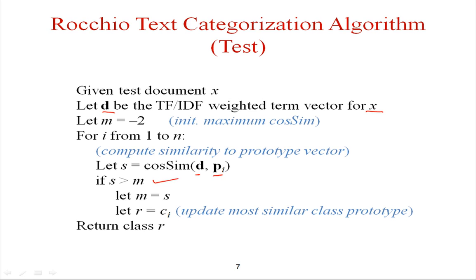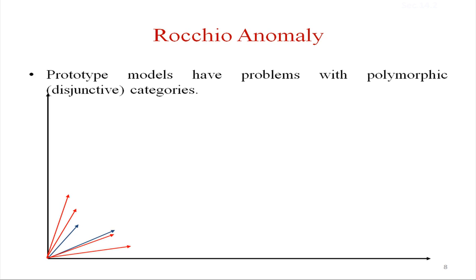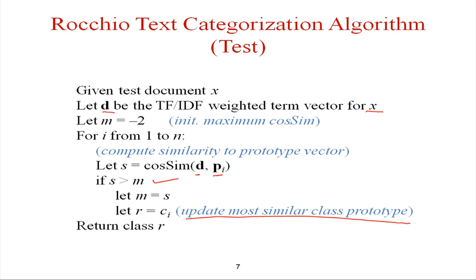In the testing phase, for a given text document x, let d be its TF-IDF weighted term vector. We calculate the cosine similarity of document d with each prototype vector pi. If it exceeds a threshold for a given class, we assign the document to that class and update the most similar class prototype.